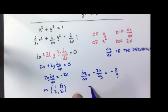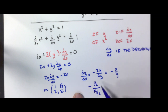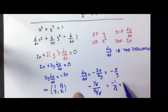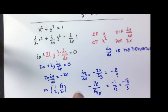Plugging in x equals 1/2 and y equals square root of 3 over 2 into dy/dx equals negative x over y, we get negative 1/2 over square root of 3 over 2. These cancel, leaving negative 1 over the square root of 3, which is negative square root of 3 over 3. That's how you get the slope of that implicitly defined function.